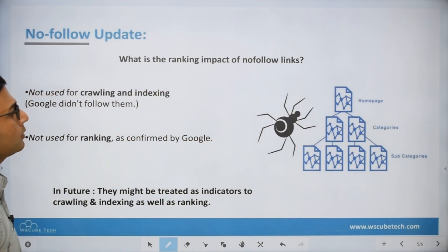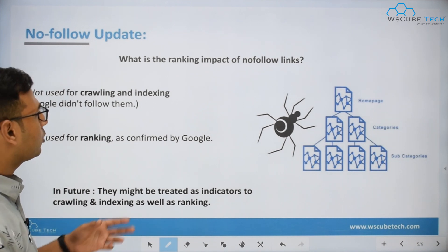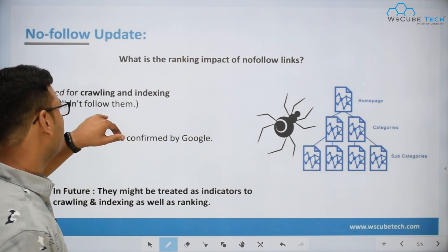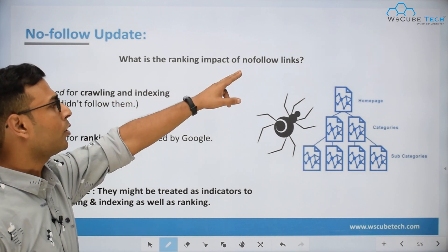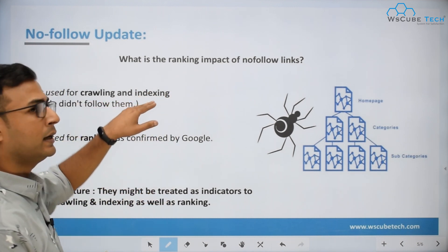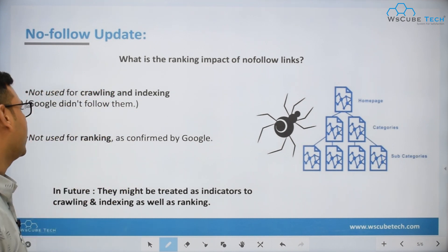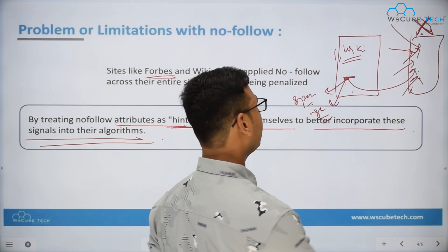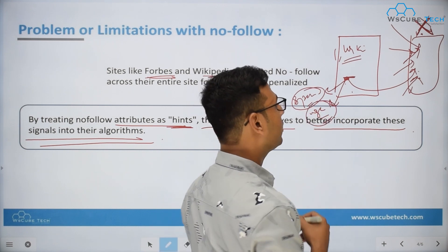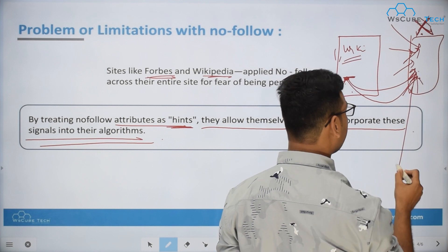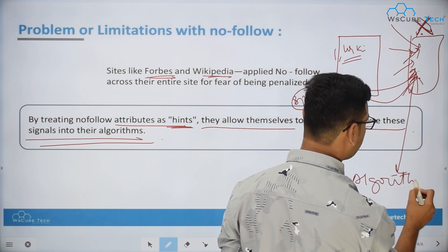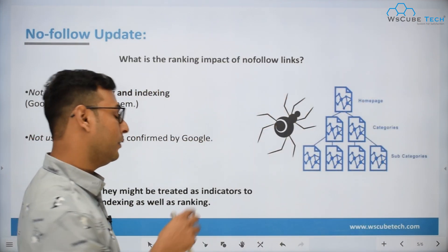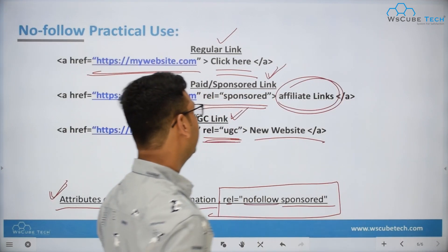Now, what kind of impact do nofollow links provide on crawling, indexing, or ranking? Since Google does not follow nofollow backlinks, there is currently no impact on crawling, indexing, or rankings. But since nofollow backlinks can now be associated with these new link attributes, they may add some hints to the algorithm, and Google might consider introducing these hints as ranking signals in the future.